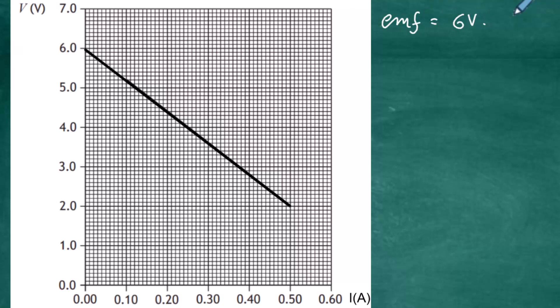For three marks we need to find the internal resistance. From the graph we find internal resistance by working out the gradient. The gradient m equals minus the internal resistance r, because there's a negative gradient — the line slopes downward from left to right. We work out the gradient by picking two points on the line.